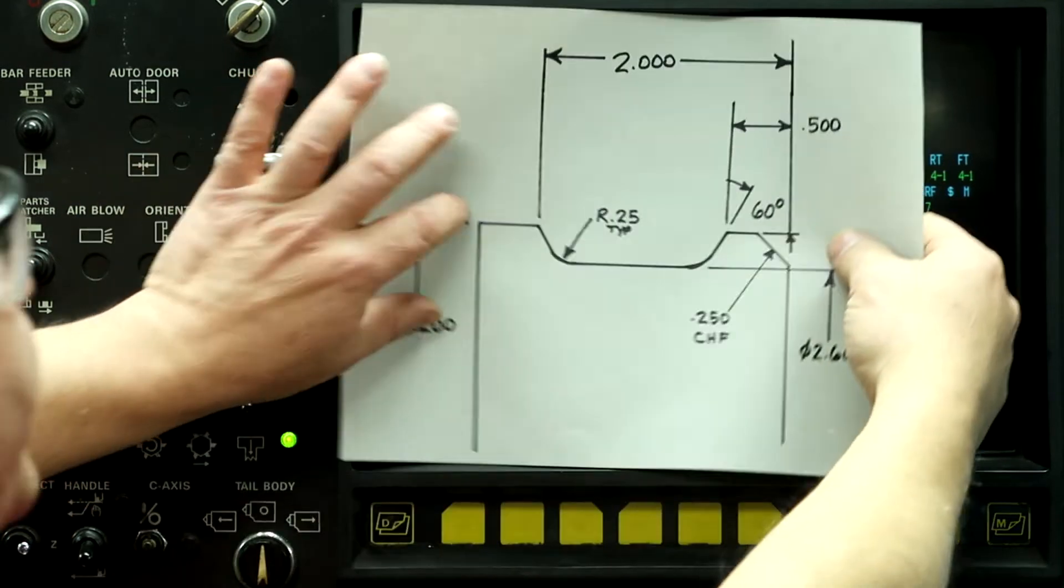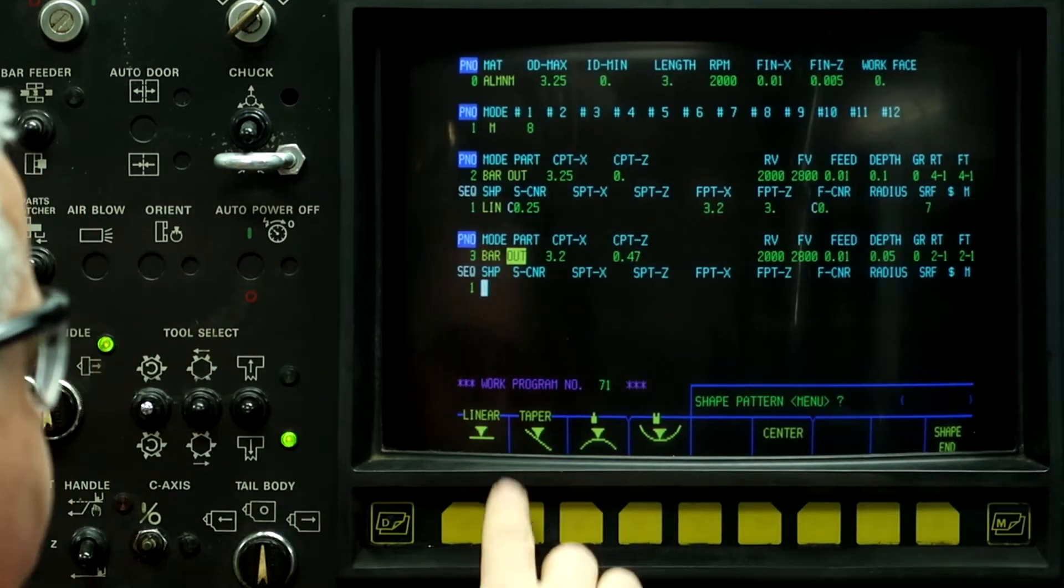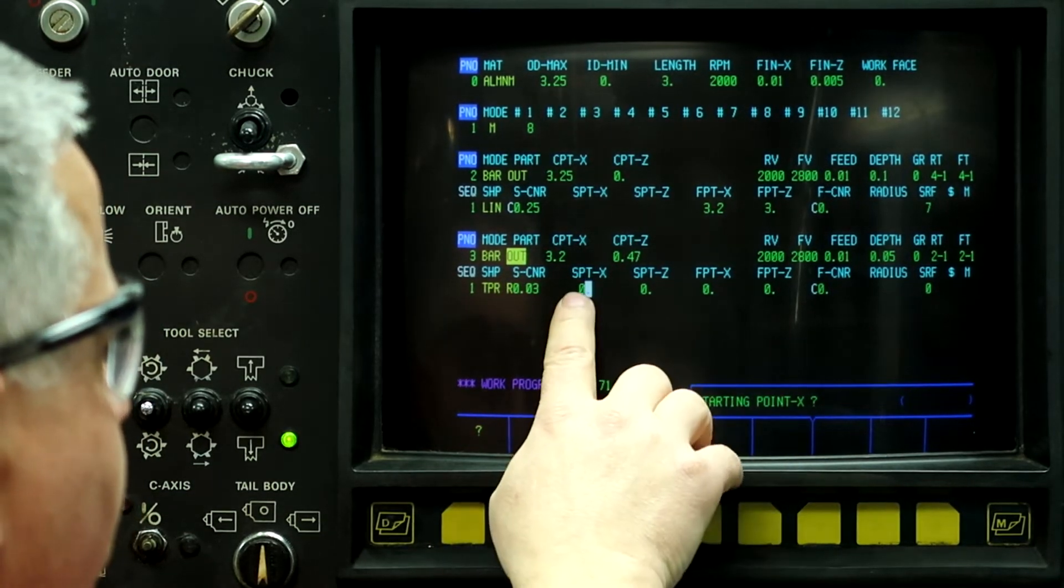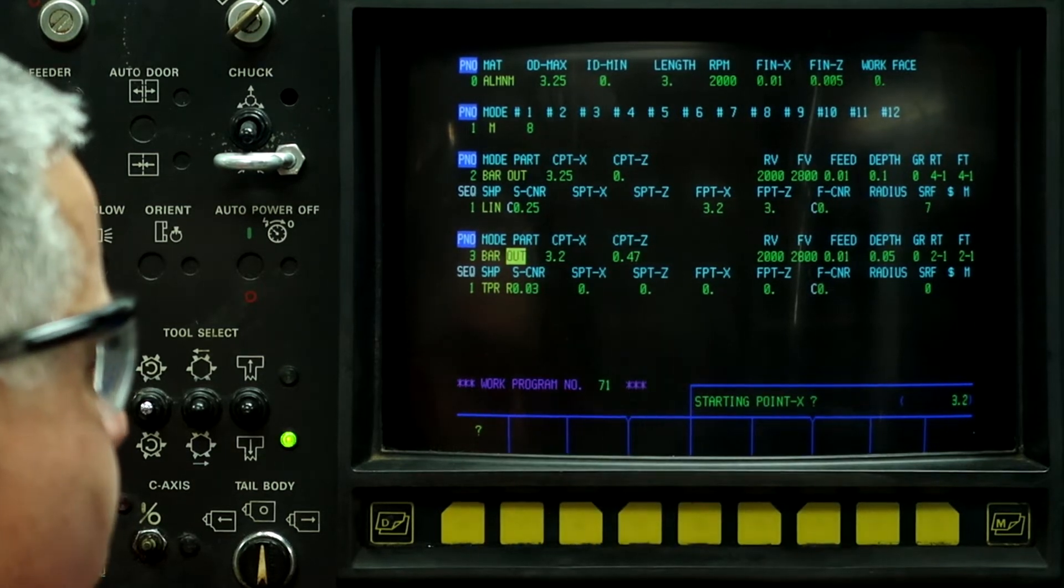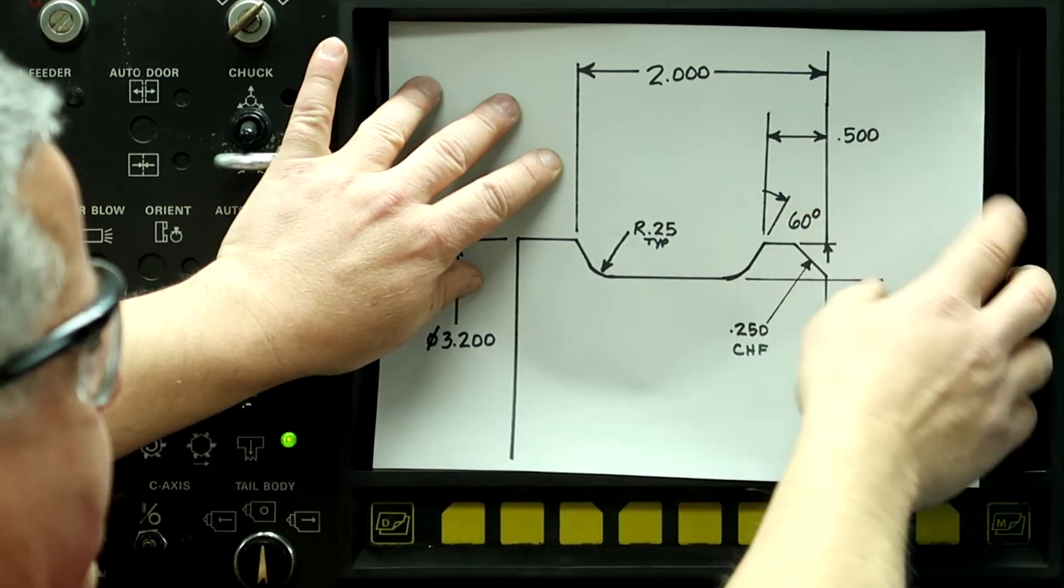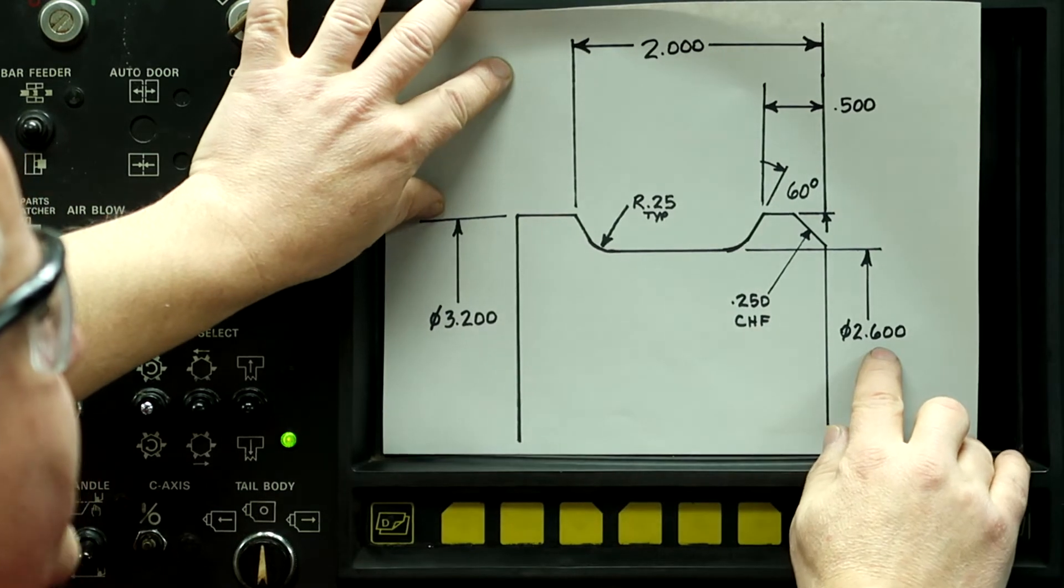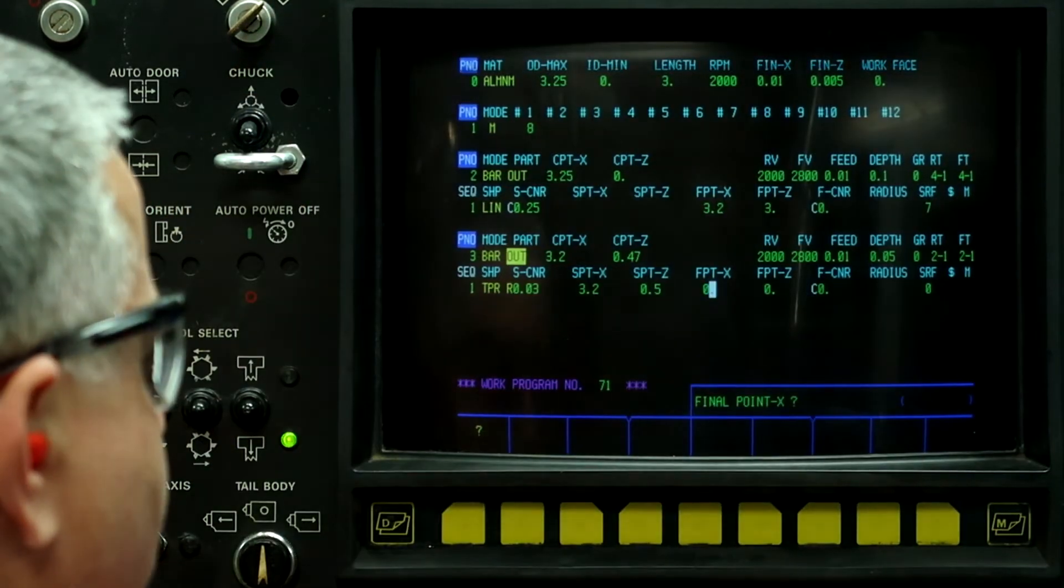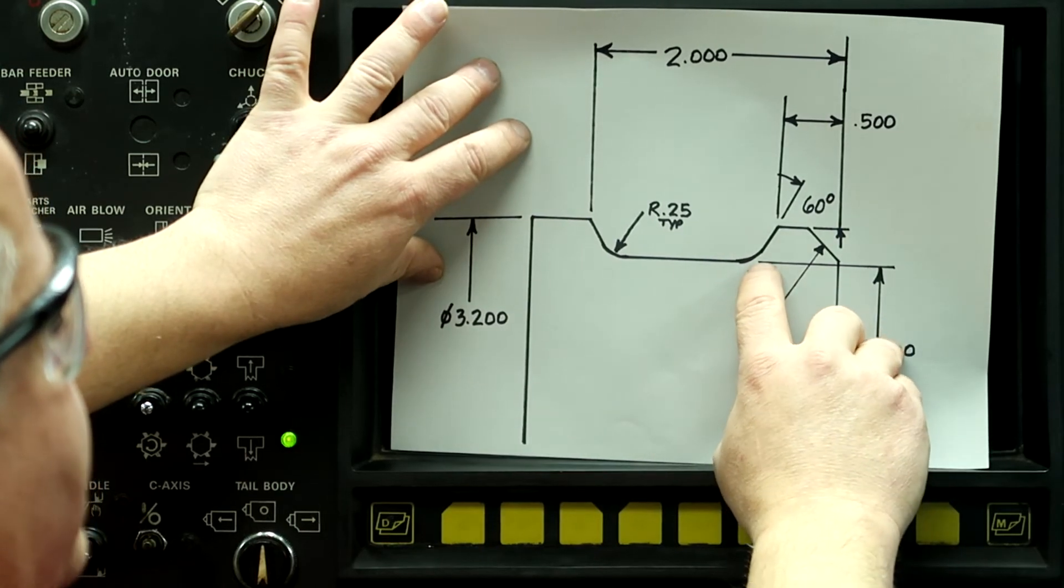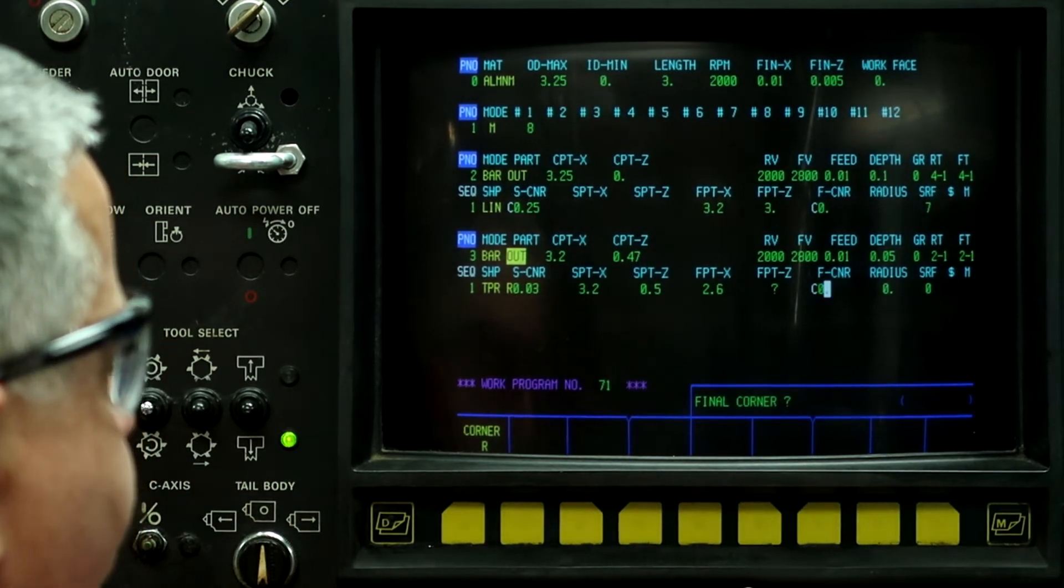So now what I'm going to do is program this taper here first. So push taper, starting corner, push radius. Starting point on X is 3.2. Starting point on Z for the taper is 0.5. Final point on X is going to be 2.6 inches down to here and the final point on Z is going to be a question mark. Final corner.